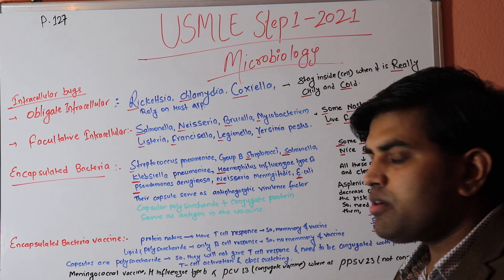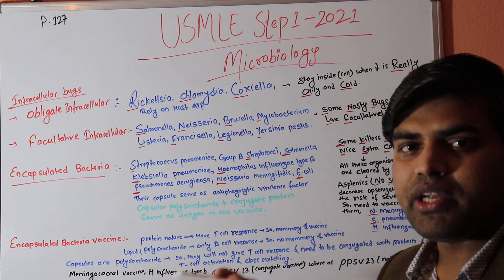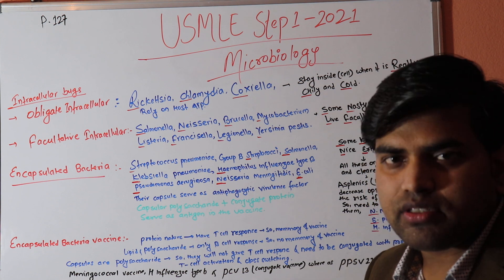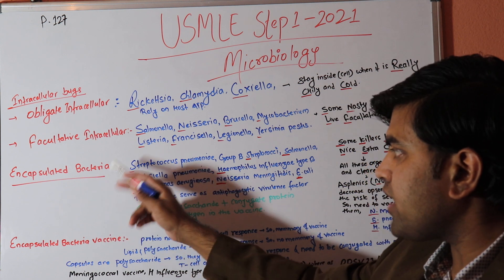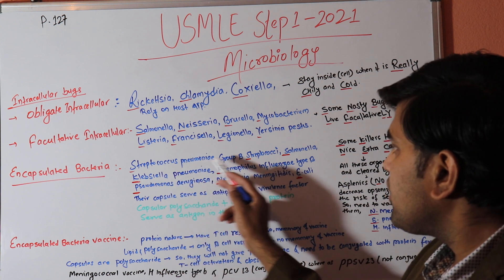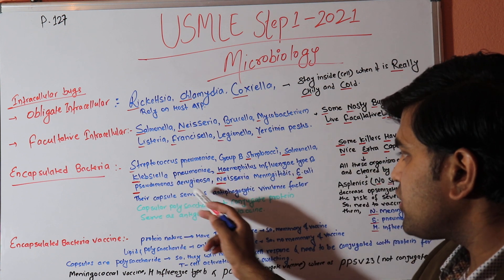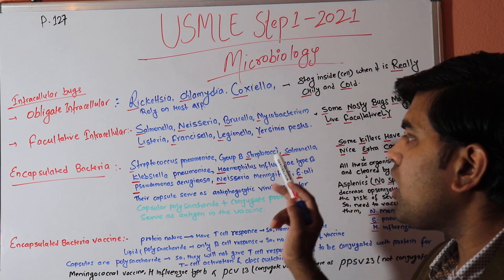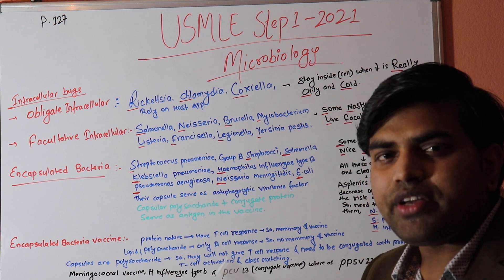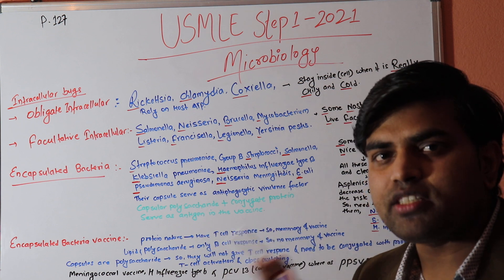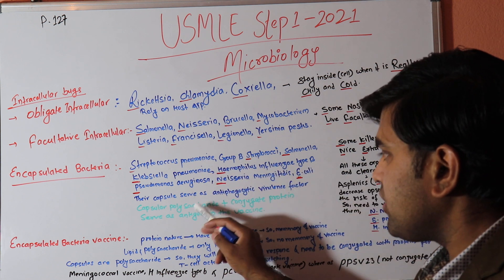Now, encapsulated bacteria — the capsule prevents phagocytosis, making it a virulence factor. Encapsulated bacteria have a greater chance of infecting us. The encapsulated organisms are: Streptococcus pneumoniae, Group B Streptococci (Streptococcus agalactiae), Salmonella, Klebsiella pneumoniae, Haemophilus influenzae type b, Pseudomonas aeruginosa, Neisseria meningitidis, and E. coli. All bacterial capsules are polysaccharide in nature, except Bacillus anthracis, which has a poly-D-glutamate capsule.